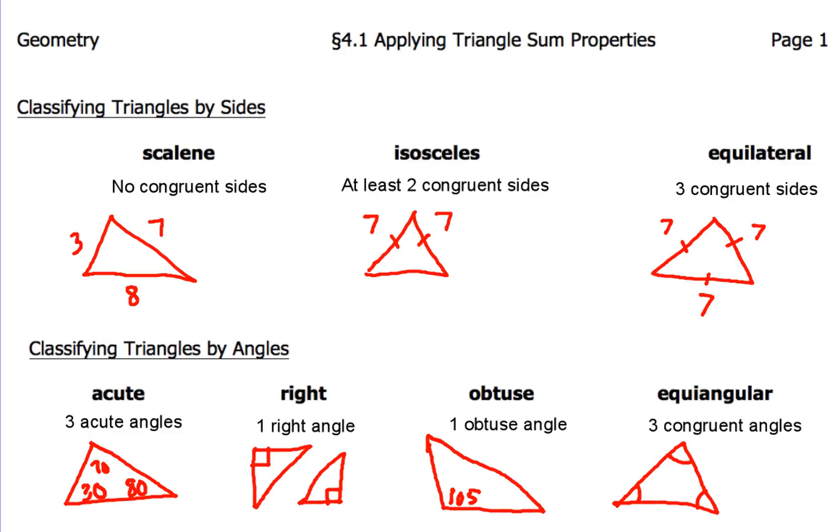So those are the four different ways you get classified triangles by their angles, along with the three different ways you can classify triangles by their sides.